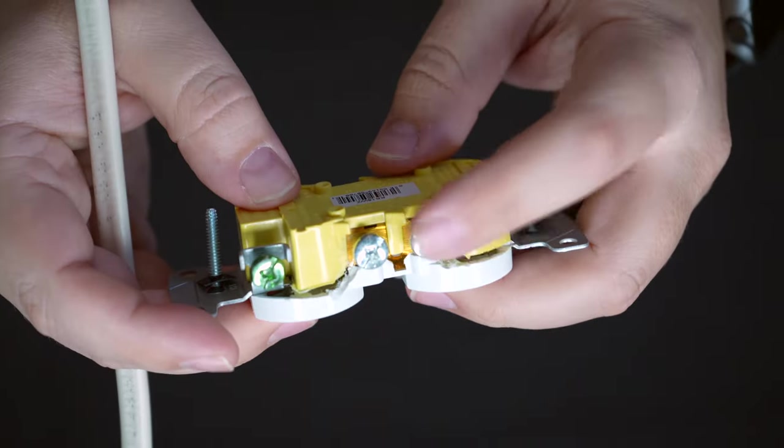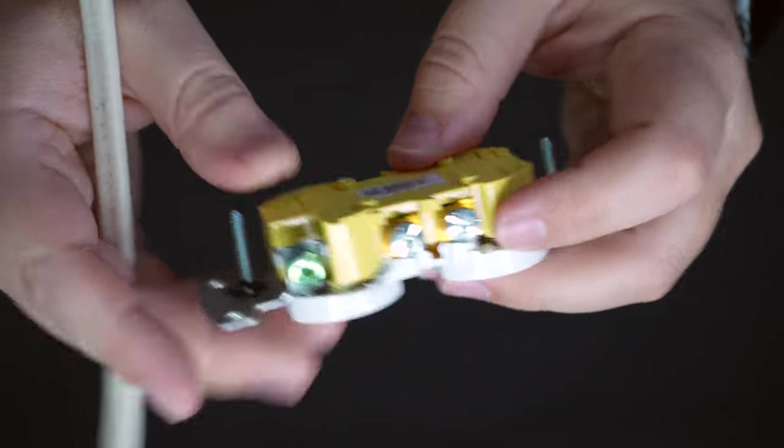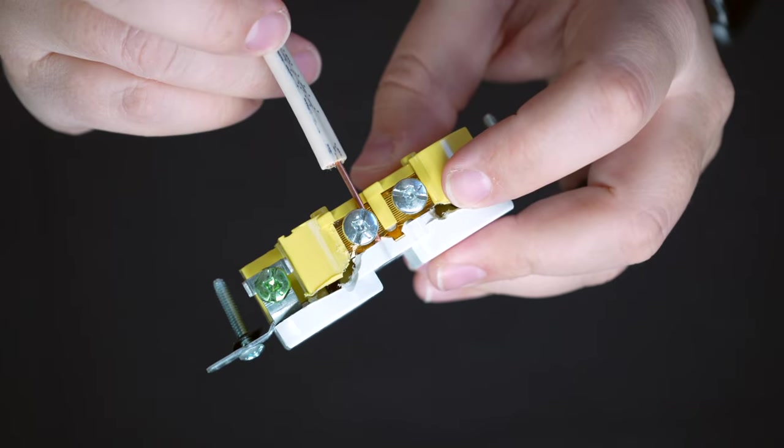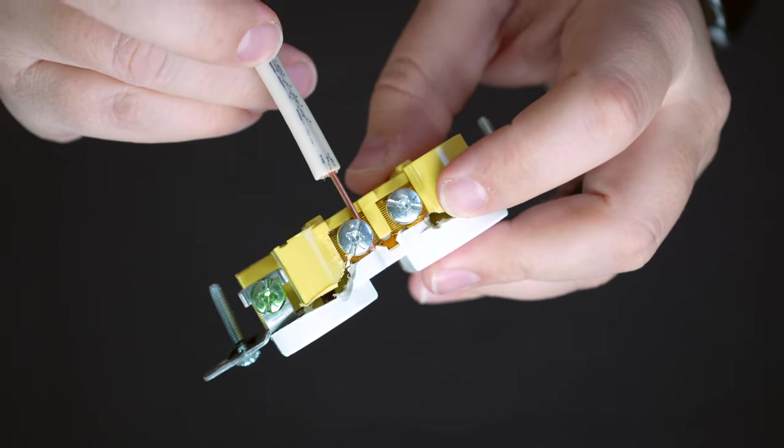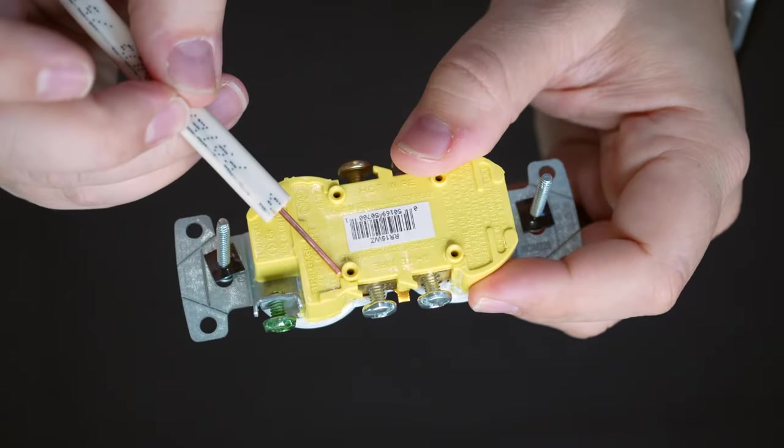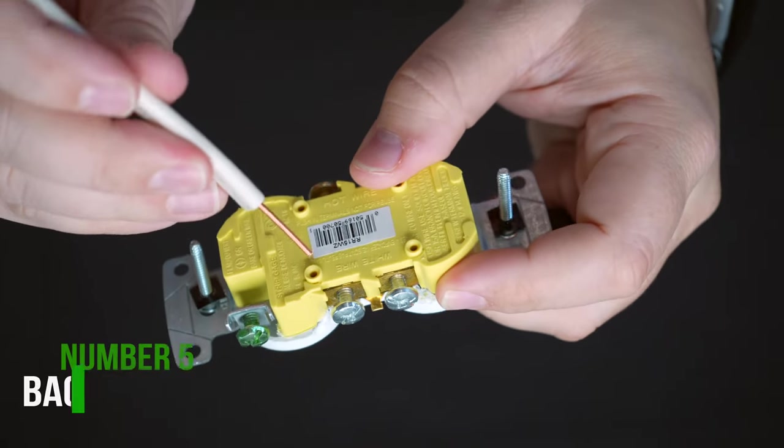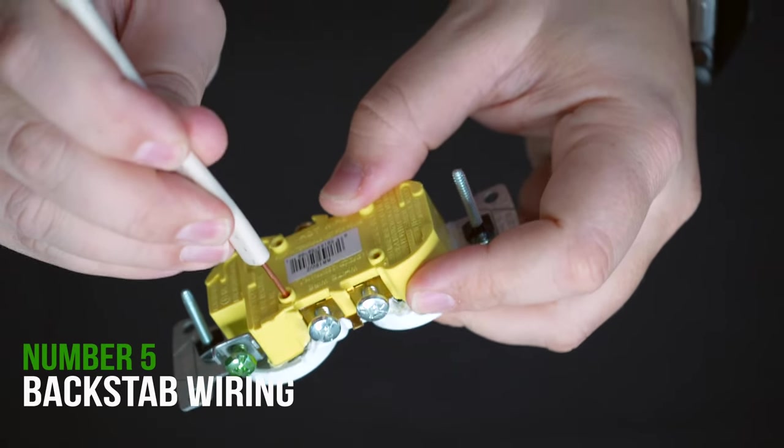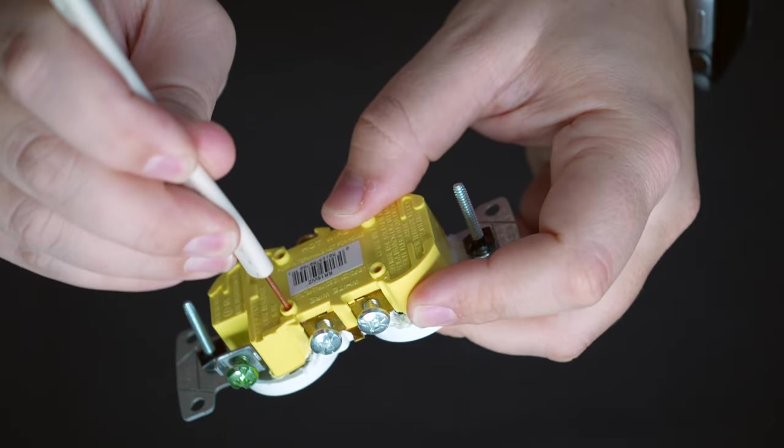Instead of using these side wire terminals to install the wire, basically you put the wire around the terminal screw and then tighten it down. Instead of using that, they'll use these backstab holes. So what you'll do here, if you were to use one of these, you'd push the wire into this until it locks in place and then that would make your connection.